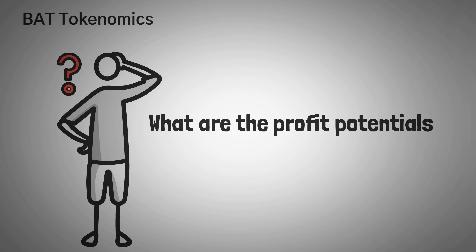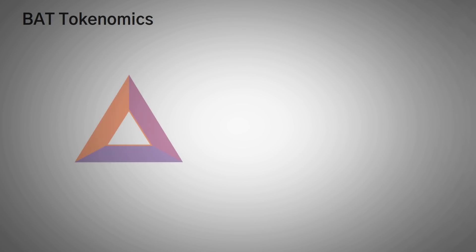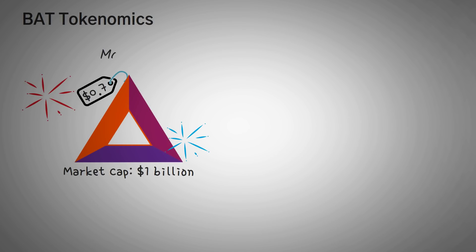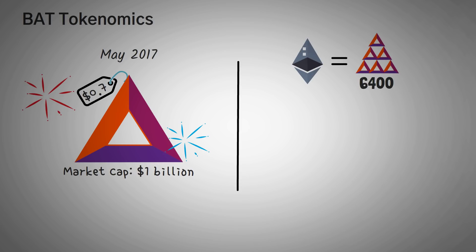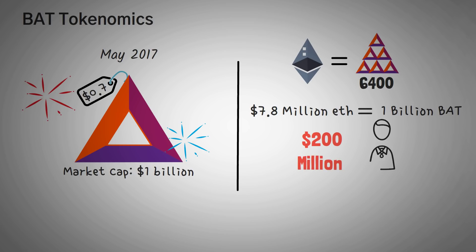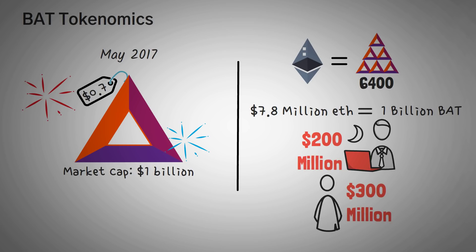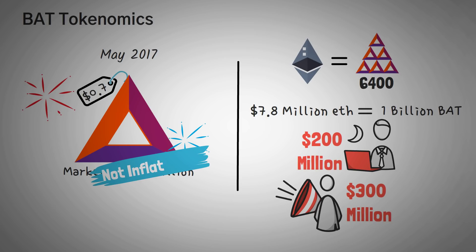Now for the fun part — the profit potentials of investing in the Basic Attention Token. The token currently trades around 70 cents and has a market cap of over 1 billion dollars. The project first launched in May of 2017 through an ICO where one Ethereum could buy you 6,400 Basic Attention Tokens, meaning around 7.8 million dollars worth of Ethereum bought 1 billion Basic Attention Tokens. Another 200 million went to the Development Fund, and 300 million tokens went to the User Growth Pool, which is basically advertising funds to get users to download and actually use the Brave software. Basic Attention Token isn't inflationary — there is a capped supply, so as demand increases, so should the price.